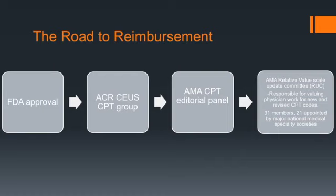Obtaining current procedural terminology, or CPT codes, for contrast ultrasound is a prerequisite for reimbursement. Requests for new CPT codes first have to be approved by the CPT editorial panel of the American Medical Association. The codes are then issued and valued by the Relative Value Update Committee of the AMA, a body composed of 31 members, 21 appointed by major national medical specialty societies.